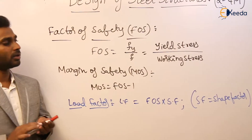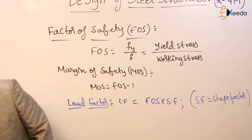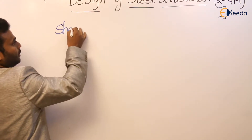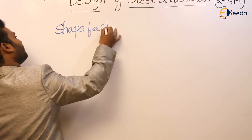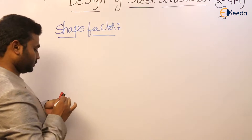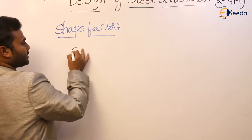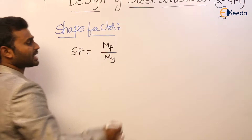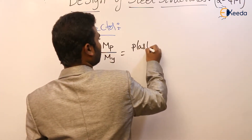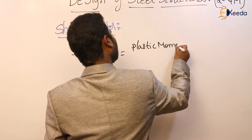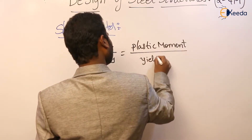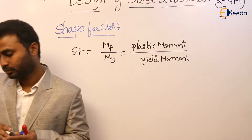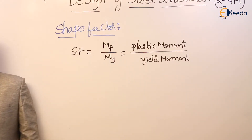These are the definitions. Now let us see what shape factor is and why it is important. Shape factor, represented as SF, is the ratio of MP by MY — that is, plastic moment by yield moment.